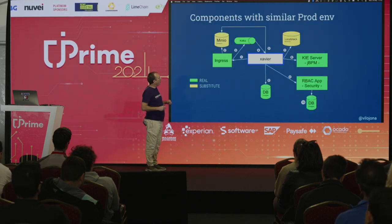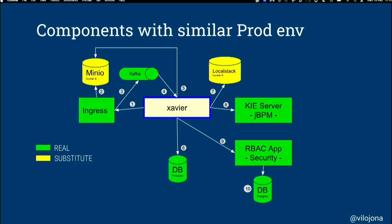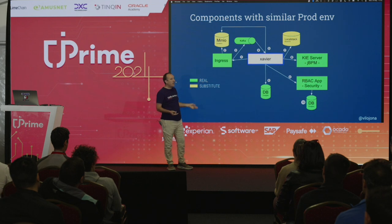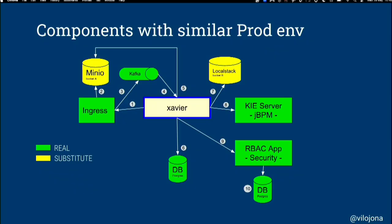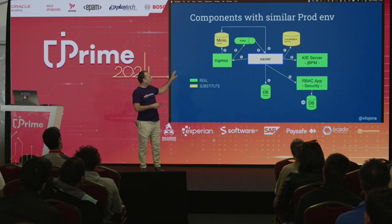In our project, we had real containers for the Ingress project, for Kie, RBAC security, PostgreSQL database, and Kafka. But for obvious reasons, we didn't have a real container for S3 — you cannot have S3 as a container. What we had instead was a similar element: Minio or LocalStack. LocalStack is a very interesting project that simulates Amazon services so you can run them locally in a container, and for your application it will look like it's connected to Amazon.